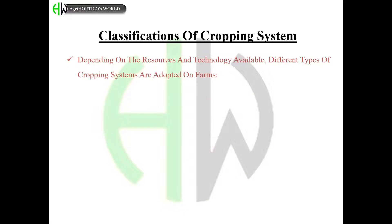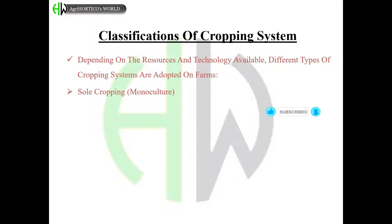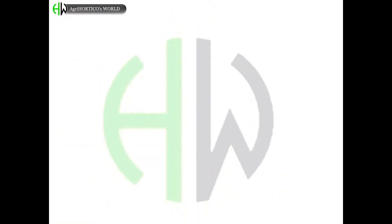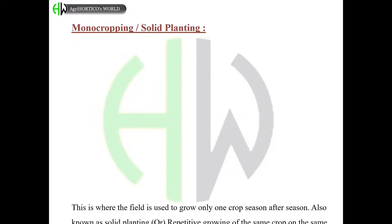Classification of cropping systems: depending on the resources and technology available, different types of cropping systems are adopted on farms. These include sole cropping or monoculture, intensive cropping — which is of two types: multiple cropping and intercropping — followed by sequential cropping and crop rotation.